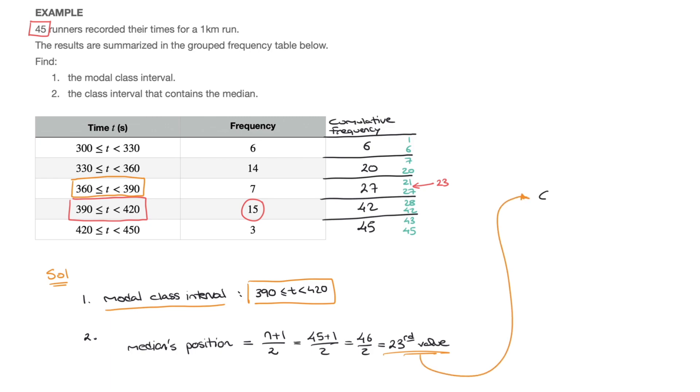And I'll simply say that the class interval containing the median is 360 to 390. And we're done.